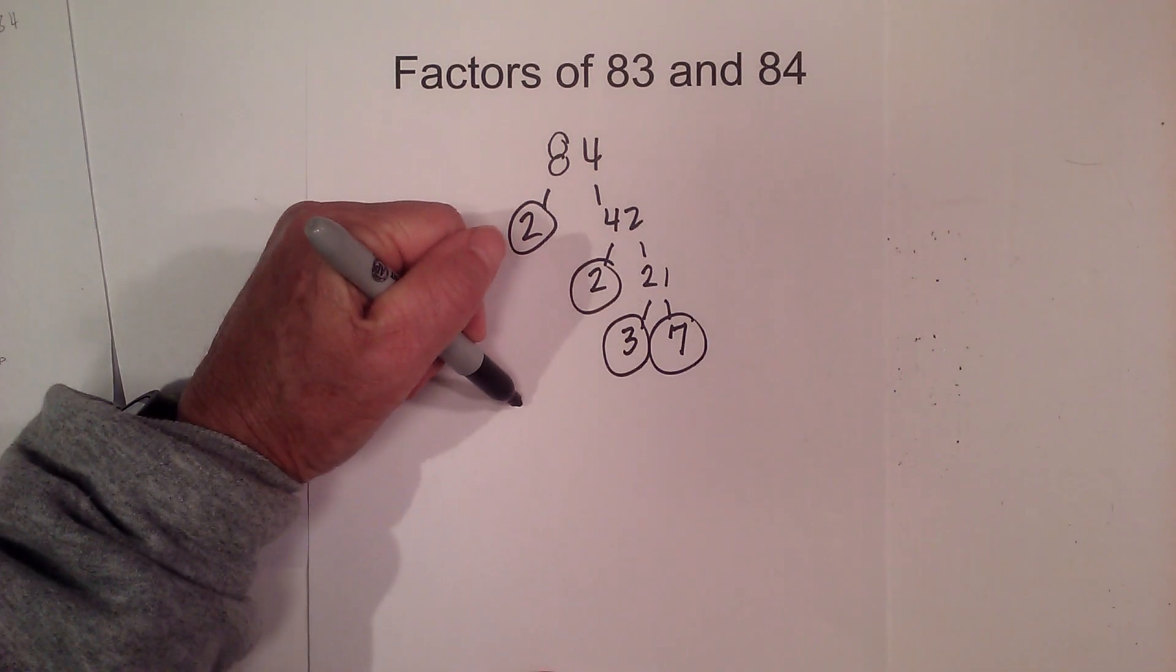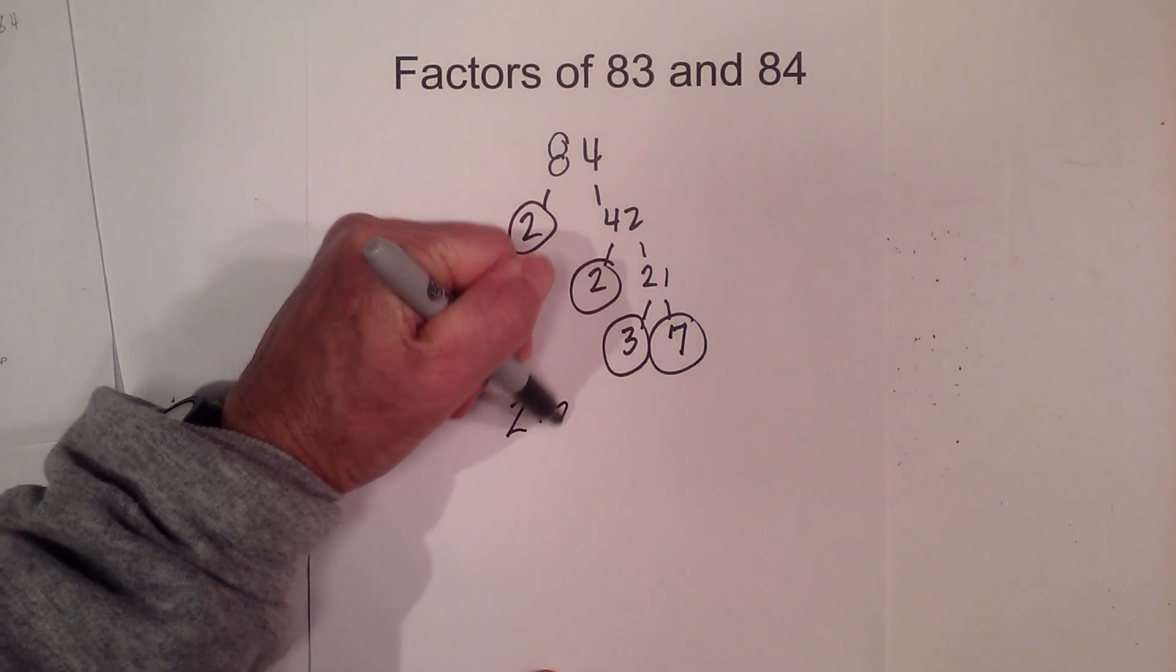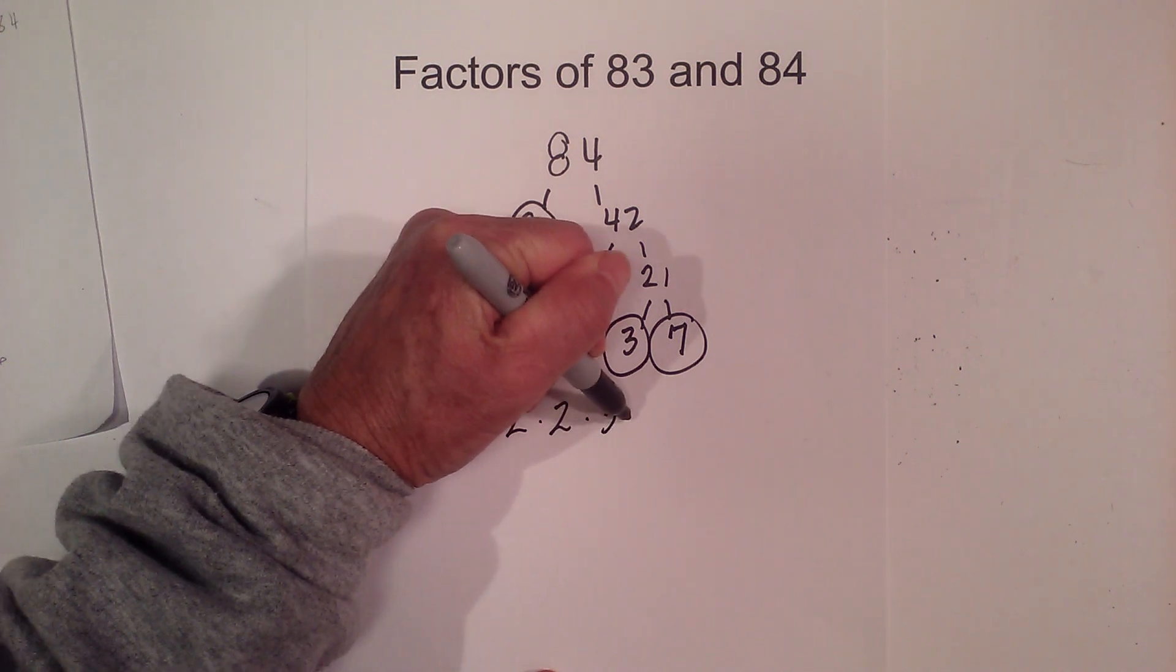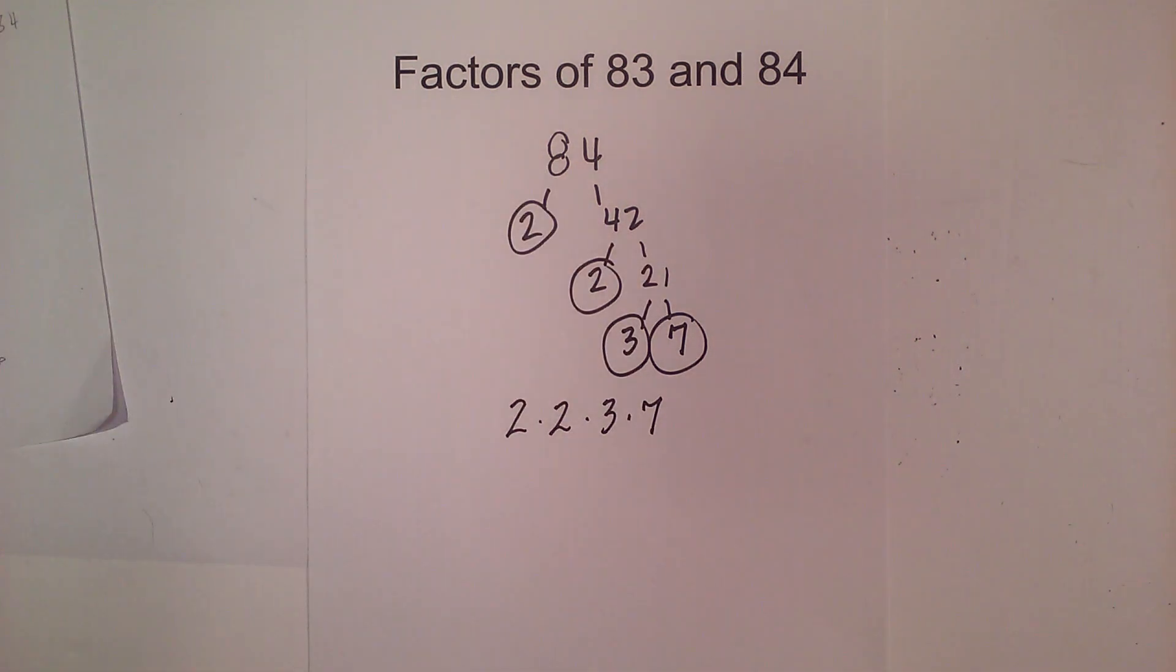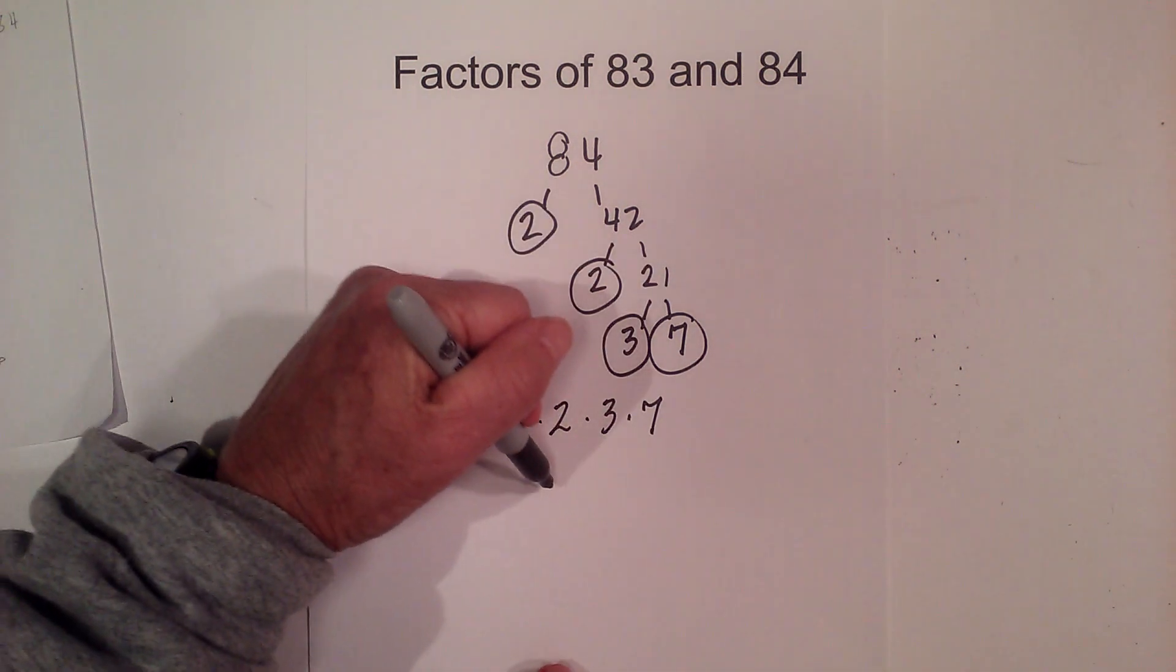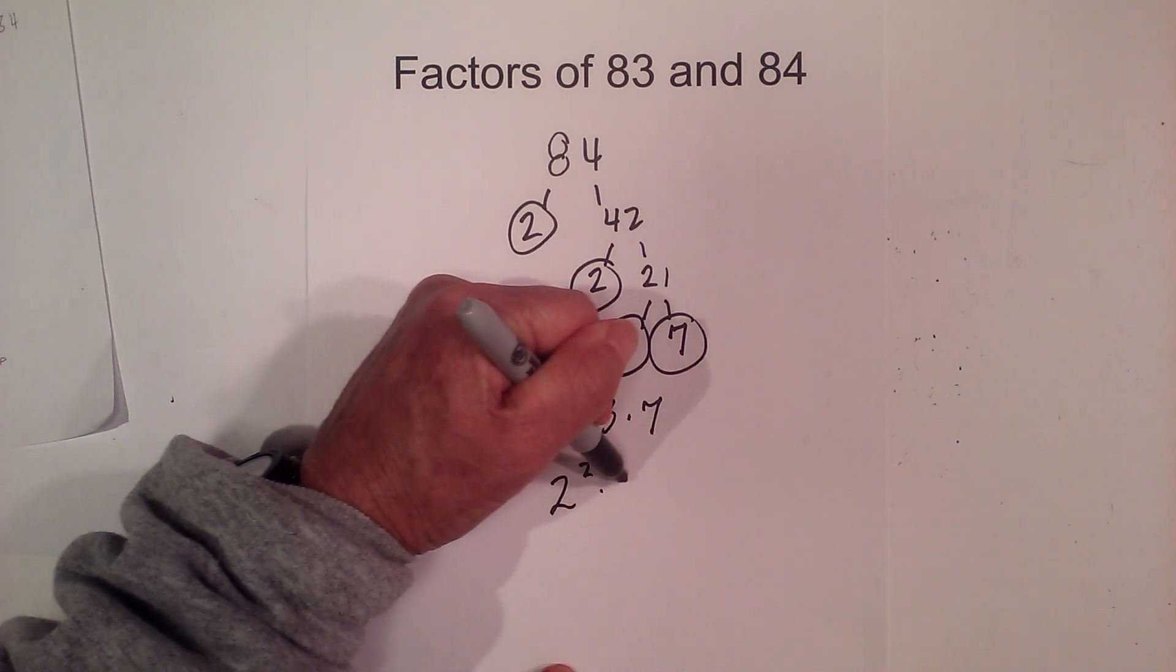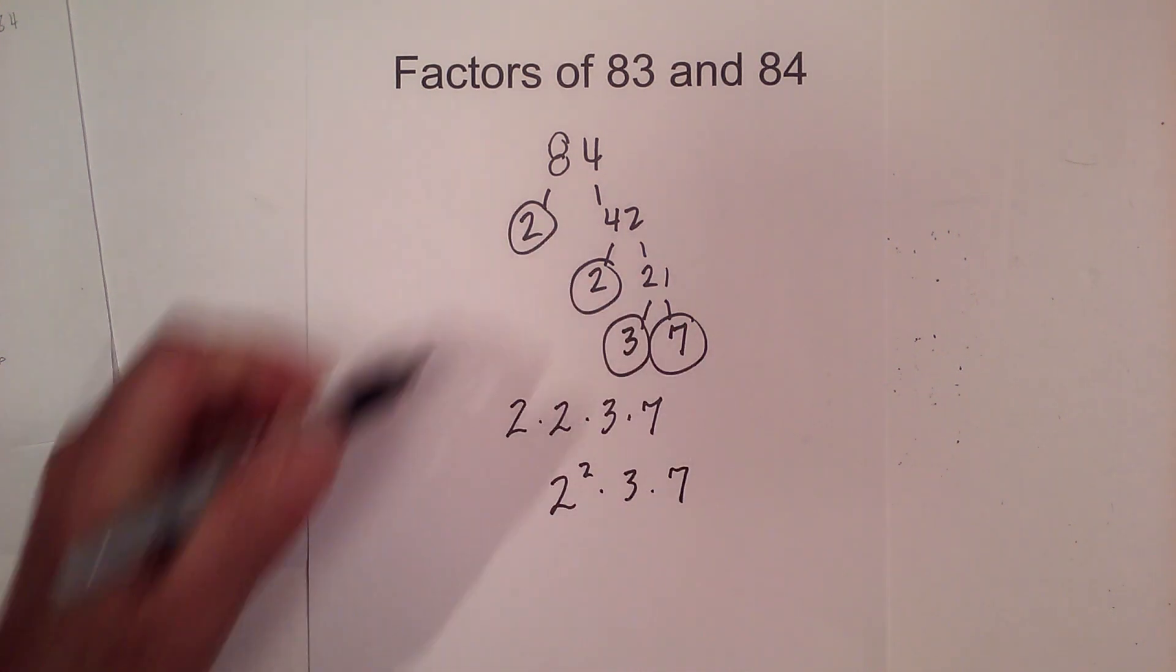So the prime factors are 2 times 2 times 3 times 7 for the number 84 or 2 squared times 3 times 7.